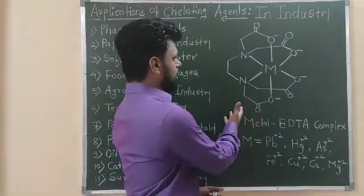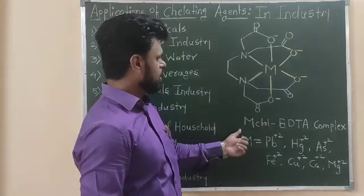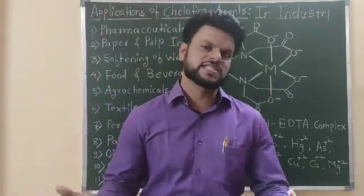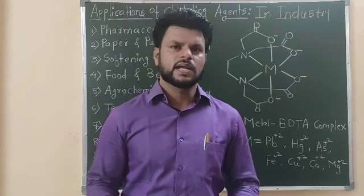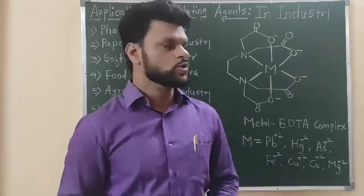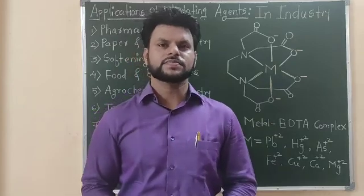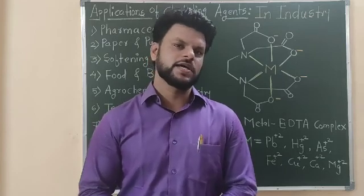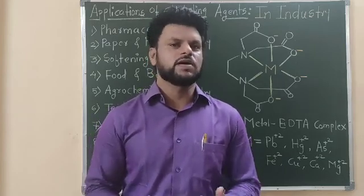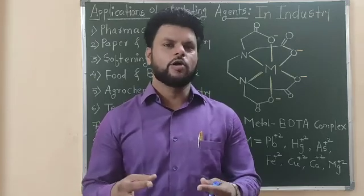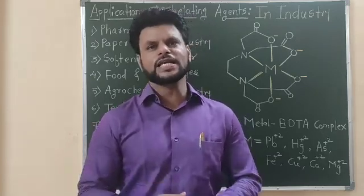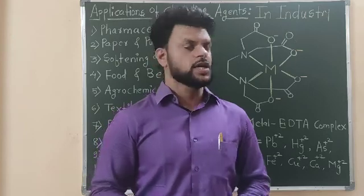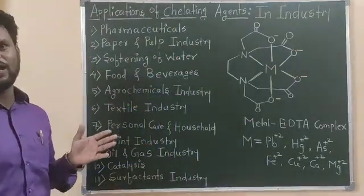This is one complex issue in which we have metal in a compound, and the metal can be various metals like arsenic, lead, copper, nickel, and so on. If you look at this structure very carefully, the metal is binding properly to the ligand moiety because a chelating ligand can form a large number of bonds. The bonding capacity is stronger and this kind of strategy can be very useful in the industrial sector. Here are some applications: pharmaceuticals, paper and pulp industry, softening of water, food and beverages, agrochemical industry, textile industry, personal care, paint industry, oil and gas industry, catalysis, and surfactant industry, and many more.